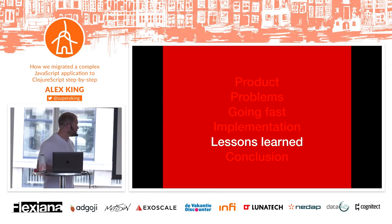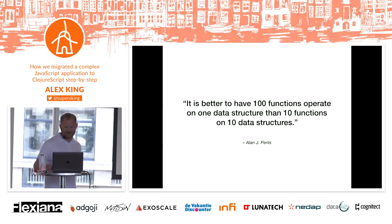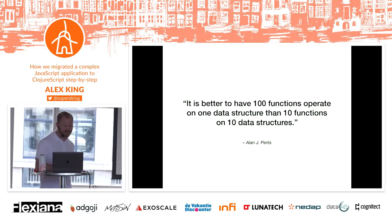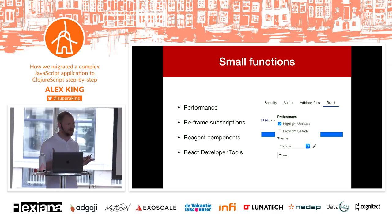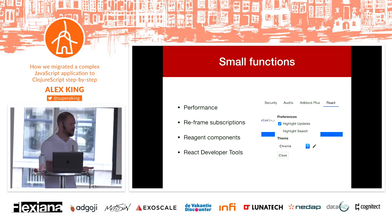What did we learn along the way? This has come up a few times already today — small functions. It's better to have 100 functions operate on one data structure than 10 functions on 10 data structures. In our case this looks a bit like the Reframe DB — one data structure with everything in there. We did hit problems with performance though: initially our subscriptions and components were probably too big, meaning instead of re-rendering just the one element we wanted, we ended up re-rendering the entire list in some cases. By keeping things small, it really helped.